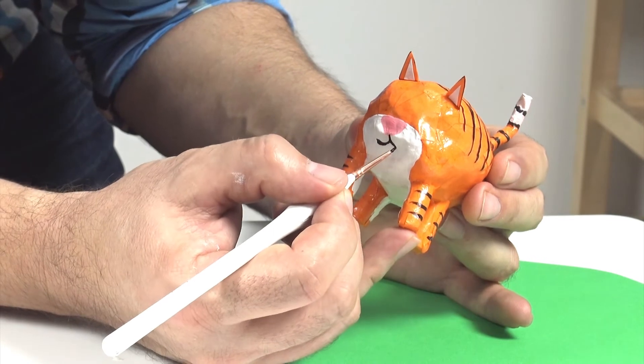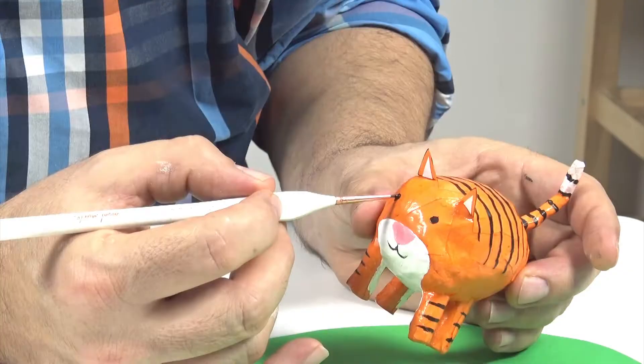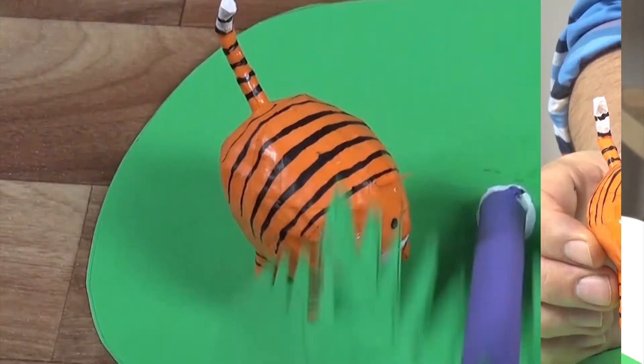The last step is the face—from the nose adding two little crescent shapes, pop on two little eyes, and that's our paper mache tiger.